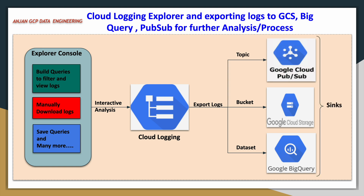By using sinks — there is an option called sinks in the Cloud Logging service — we will try to export these logs to other Google Cloud services like GCS, BigQuery, or a PubSub topic. While creating the sinks you can also apply filters to exclude certain logs. If you do not want to export every log and want to export only a specific access log, you can do that by applying filters. Let us quickly move to the demo.